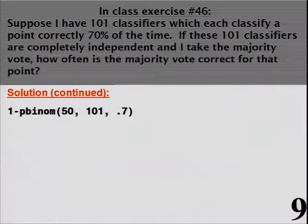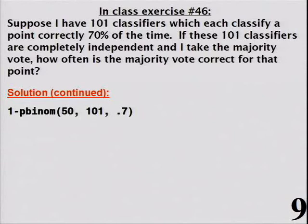So if things were completely independent — if you were in a perfect world — you could just take a majority vote and you would do perfectly. Of course, things aren't going to be completely independent, but to the extent that the different classifiers you're averaging are somewhat uncorrelated, you can improve performance to some degree.